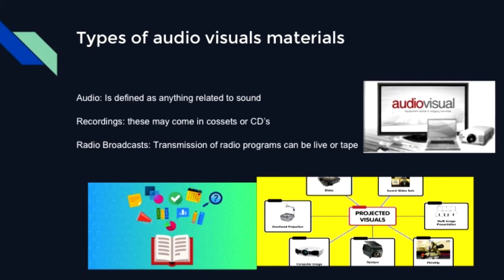Types of audio-visual materials: Audio is defined as anything related to sound in terms of receiving, transmitting, or reproducing at its specific frequency. Recordings may come in cassettes or CDs — recordings of music, sound, or images stored so that they can be heard or seen again.